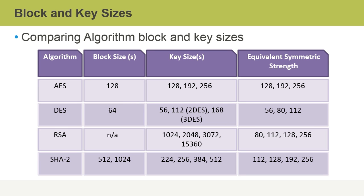If we compare algorithm block and key sizes, we get an idea of their strength. With the AES algorithm, the block size is 128 bits and the key sizes are 128, 192, and 256. For DES, its block size is 64 bits and it has key sizes including 56, 112, and 168. SHA-2, the secure hashing algorithm, has block sizes of 512 or 1024, and key sizes ranging from 224 to 256 to 384 to 512.